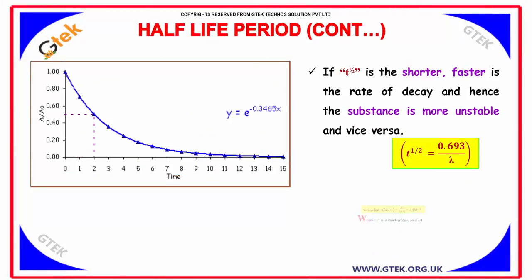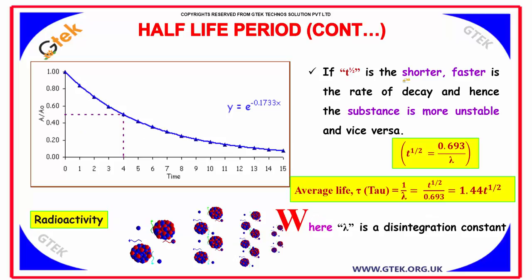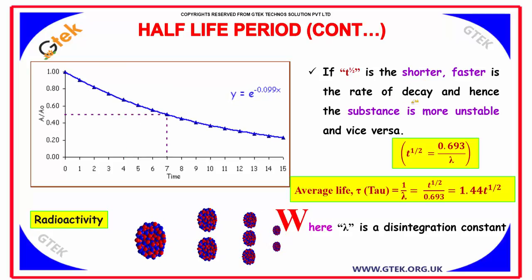If T half is shorter, faster is the rate of decay and hence the substance is more unstable and vice versa.